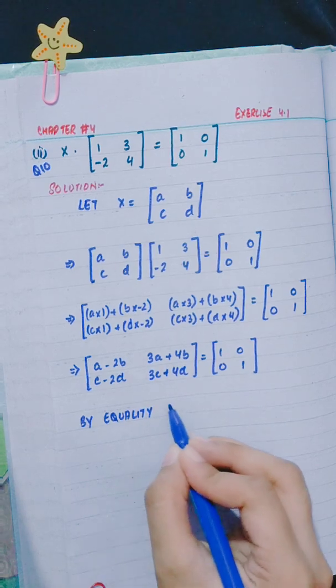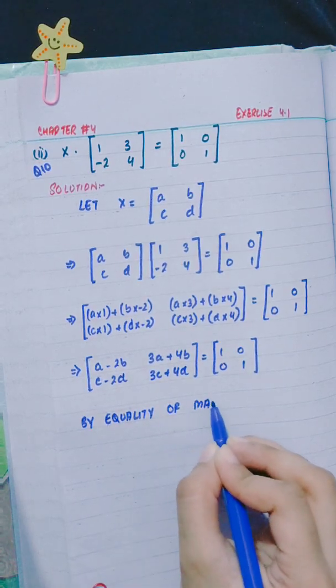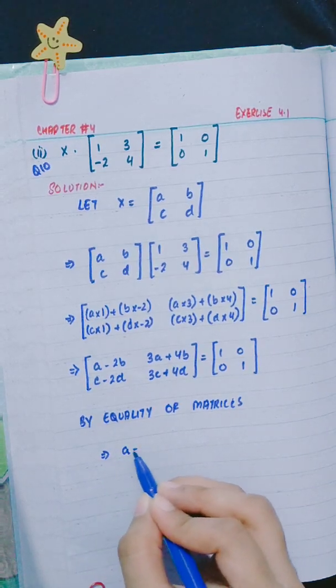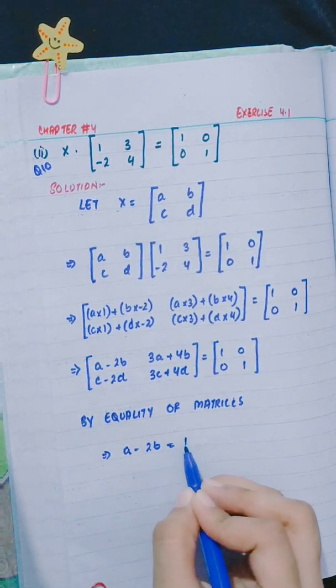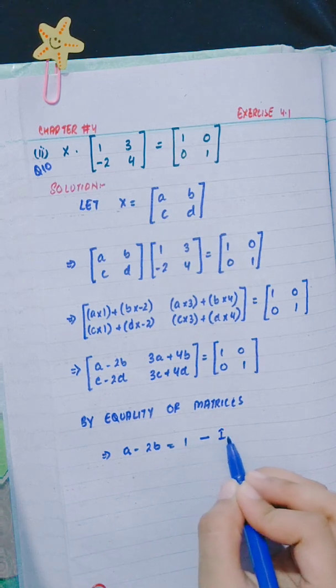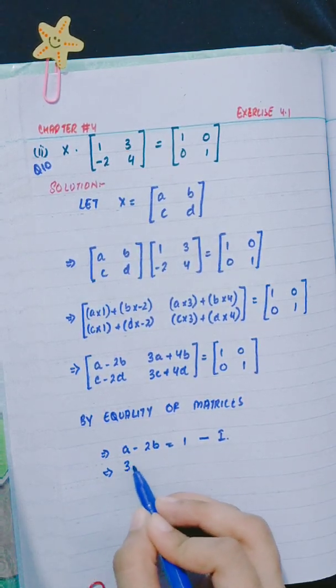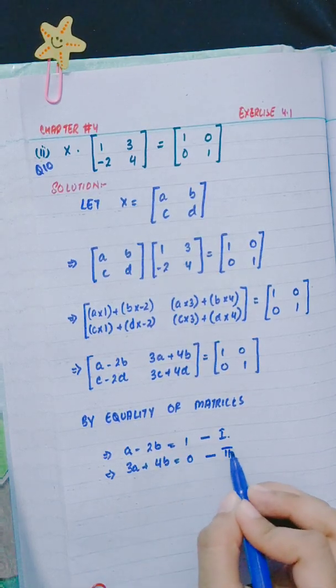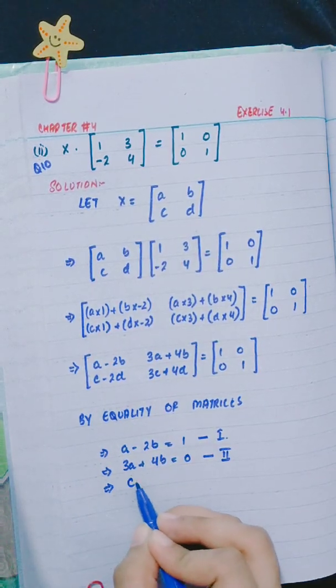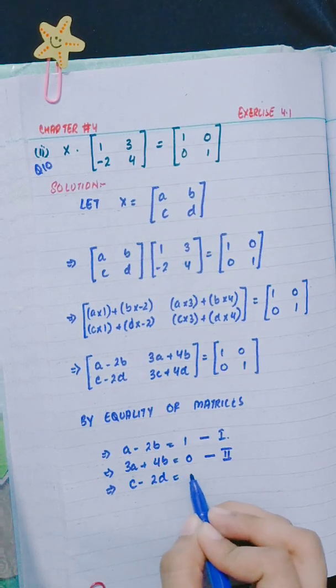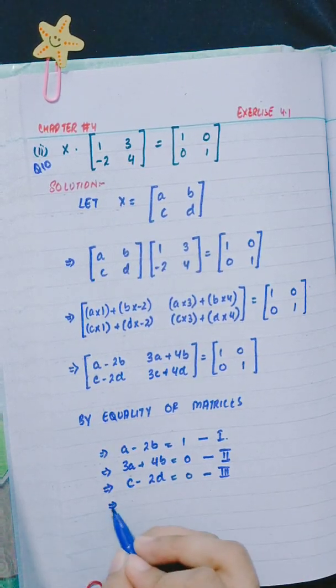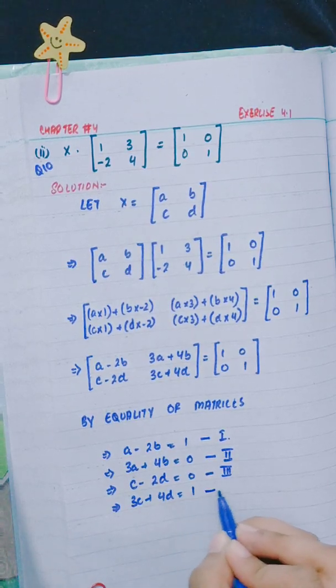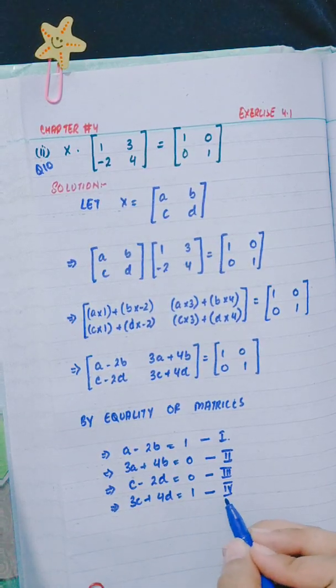By equality of matrices: a - 2b = 1, call this equation number 1. 3a + 4b = 0, call this equation number 2. c - 2d = 0, equation number 3. And 3c + 4d = 1, equation number 4.